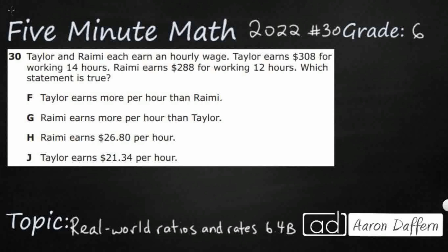So, we've got Taylor and Ramey each earn an hourly wage. Taylor earns $308 for working 14 hours. Ramey earns $288, a little bit less, but it is less hours, 12 hours. Which statement is true? We're looking at per hour, really, is what we're looking at.